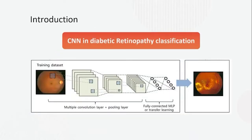Medical image applications include medical image analysis, disease diagnosis, and prediction. In this figure we have CNN applied to Diabetic Retinopathy classification: fundus images from the training dataset are input into the convolutional neural network, which consists of multiple convolutional layers, pooling layers, and fully connected layers, then giving an output.